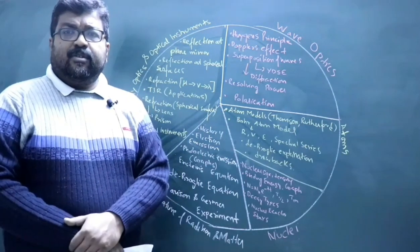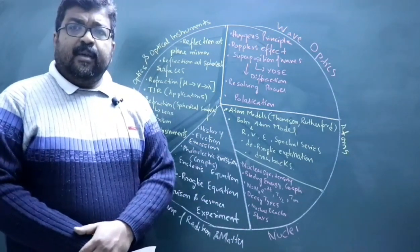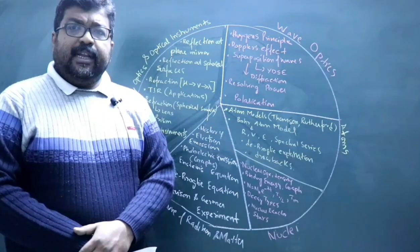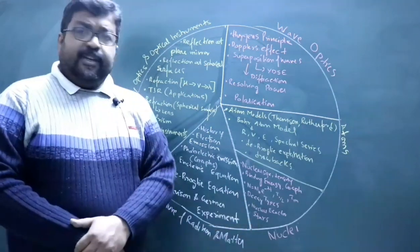Then the derivation for the decay law, decay expression, half-life and mean life, and numericals based on these expressions. Then what are the four decay types: alpha decay, beta decay, gamma decay, and electron capture. Then the nuclear energy generation and the function of particular components in a nuclear reactor.